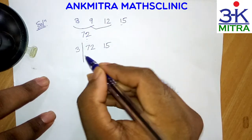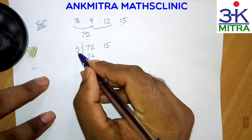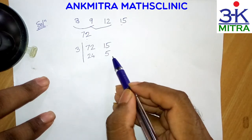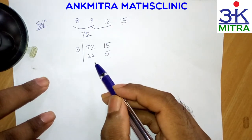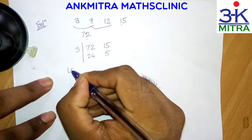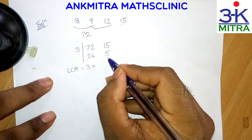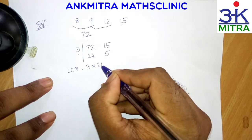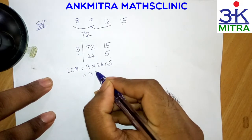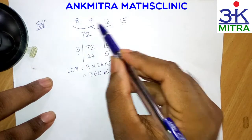The common factor of 72 and 15 is 3, so we divide both by 3: 72 divided by 3 gives 24, and 15 divided by 3 gives 5. There is no common factor between 24 and 5, so we stop here. The LCM is the GCD (3) multiplied by the product of the two uncommon factors: 3 × 24 × 5 = 360.